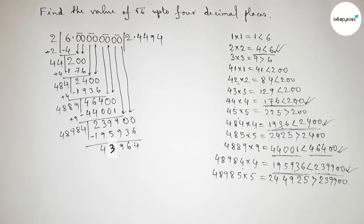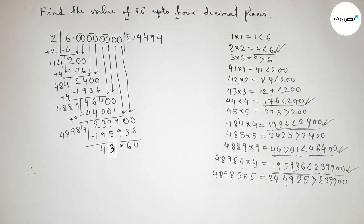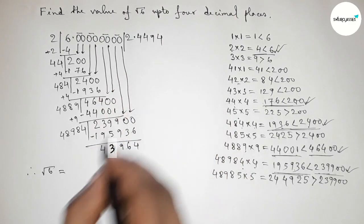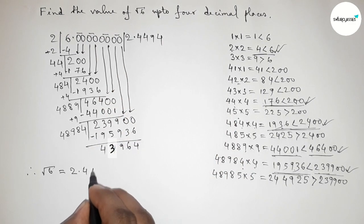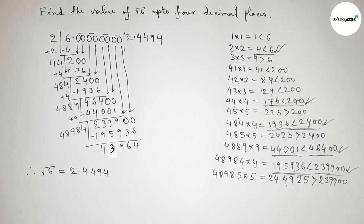Therefore, the value of root 6 up to 4 decimal places equals 2.4494. That's all. Thanks for watching. If this video is helpful to you, please share it with your friends. Thanks for watching.